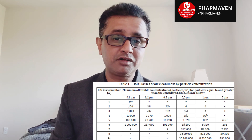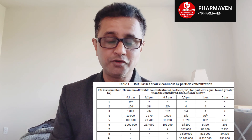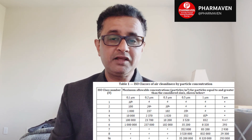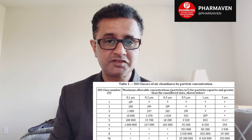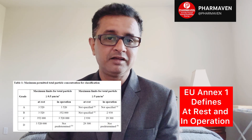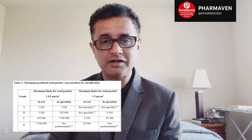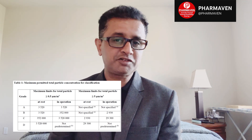ISO determines area classification based on the number of particles per cubic meter and assigns ISO numbers such as ISO 5, ISO 6, ISO 7, ISO 8, and ISO 9. ISO does not define whether conditions are static or in operation. However, EU GMP Annex 1 clearly defines particle limits based on whether it is static or in operation.